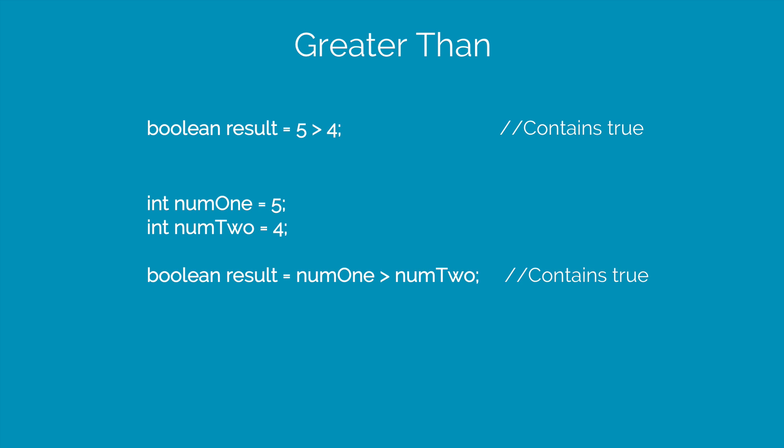The first operator that we discuss is greater than. Notice the example here that says 5 greater than 4. Such expressions either return a true or a false and we both know which data type is capable of storing those values, which happens to be a boolean in our case. We can also have two separate variables like num1 and num2 and then compare if num1 is greater than num2 and that result can be stored.